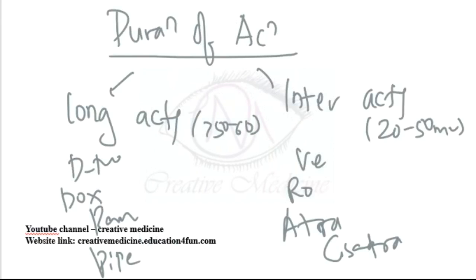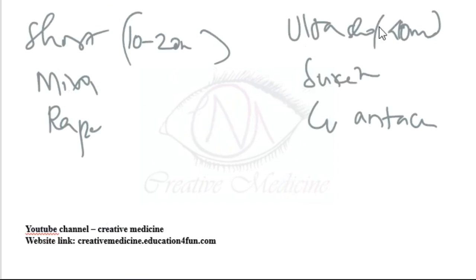Based on duration of action: long acting are d-tubocurarine, doxacurium, gallamine, pancuronium, and pipecuronium. Intermediate acting are vecuronium, rocuronium, atracurium, and cis-atracurium. Short acting are mivacurium and rapacurium. Ultra-short acting are suxamethonium and gantacurium.